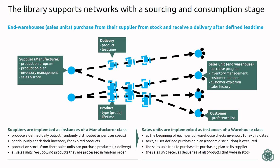The structures that can be modeled with this library include on the first stage a set of manufacturers that act as suppliers. These manufacturers produce according to a defined production program. It is possible to quantify the average daily production output and also the associated variability in production — so sometimes a little bit more, sometimes a little bit less — and the production program defines the percentage of various different product types that the manufacturer or supplier is producing.